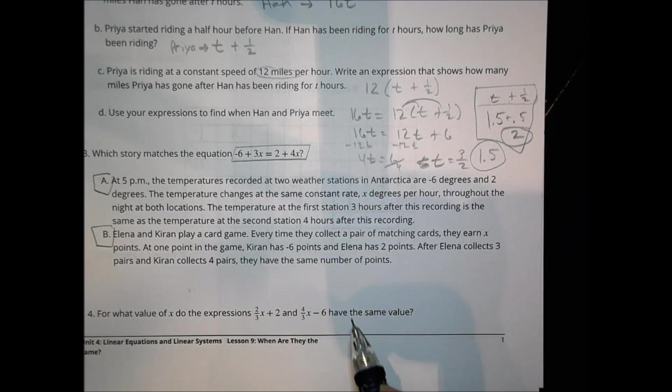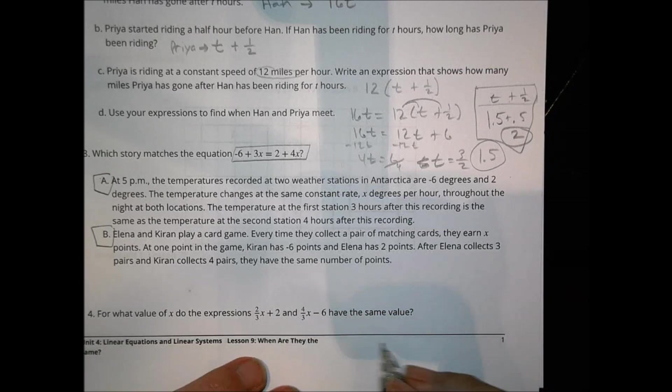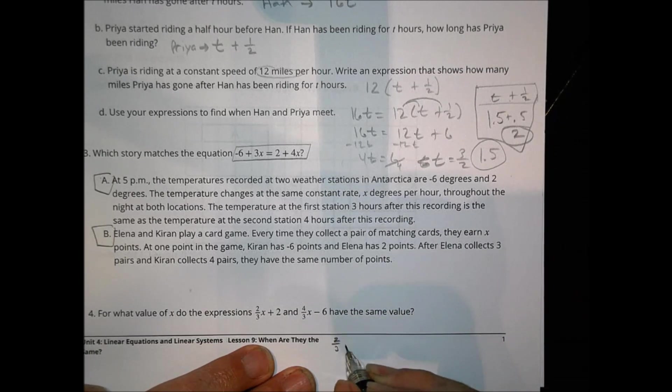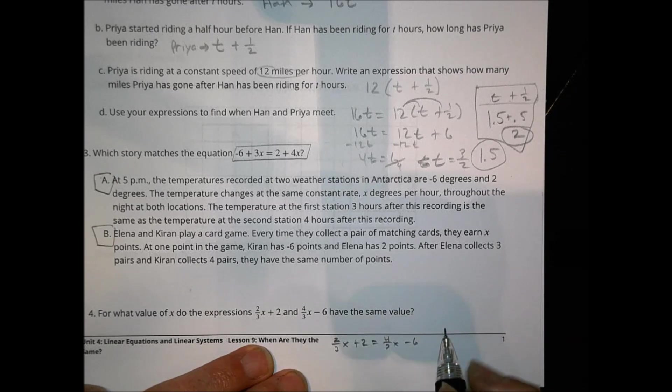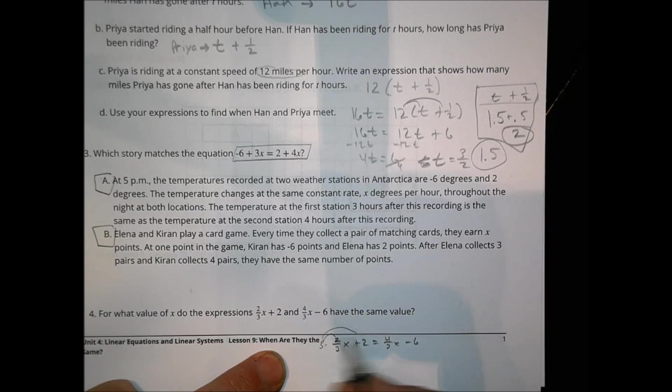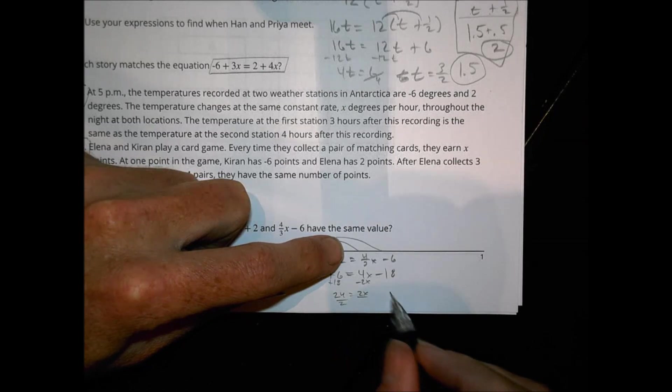Number 4. For what value do the expressions 2/3 x plus 2 and 4/3 x minus 6 have the same value? To find that out we have to make them equal to each other. So we'll say 2/3 x plus 2 equals 4/3 x minus 6. I'm going to get rid of the fractions. To do that I'll multiply everything by 3. So this times 3 becomes 2x. This times 3 becomes 6. This times 3 becomes 4x. And this times 3 becomes negative 18. Now we can solve for what's left. We can subtract 2x here. We can add 18 there. And we have 24 equals 2x. To solve for x we divide by 2. And x is going to equal 12.